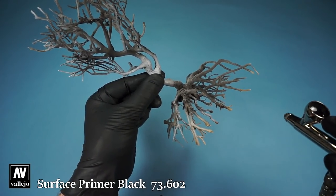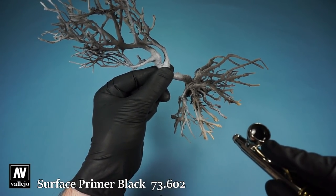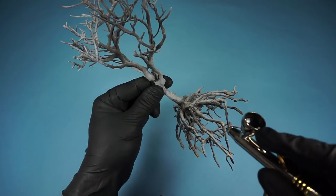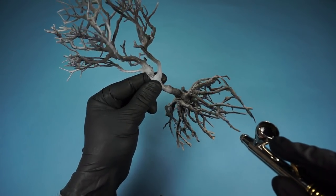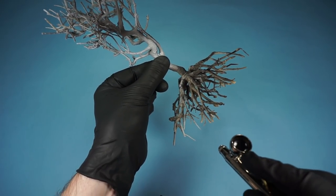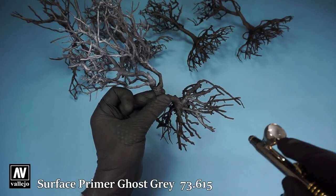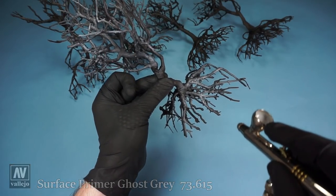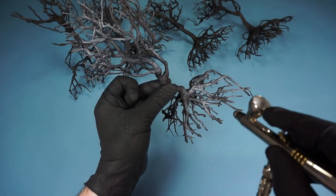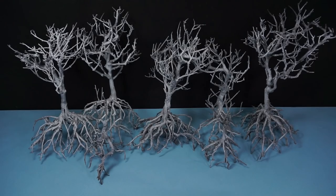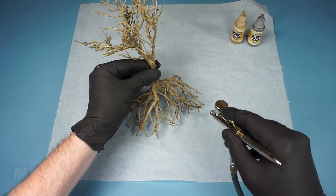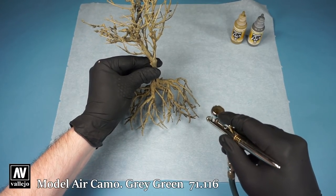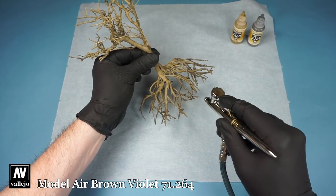To begin painting the trees I start by priming them black followed with some light grey. The trees are then given some color by adding a few natural looking color tones.